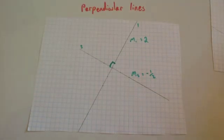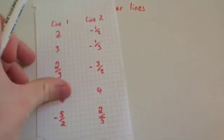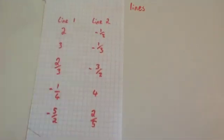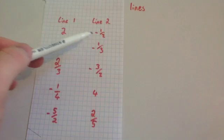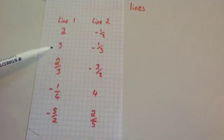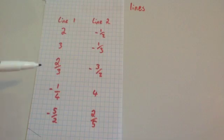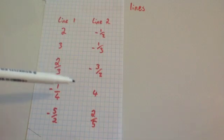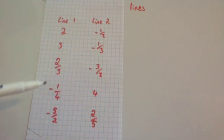I've done this for several other graphs and here's what I found. When the first line had gradient two, the perpendicular line was minus a half. Another line had gradient three, and the perpendicular line was minus a third. Another line had gradient two thirds, and the perpendicular gradient was minus three halves.